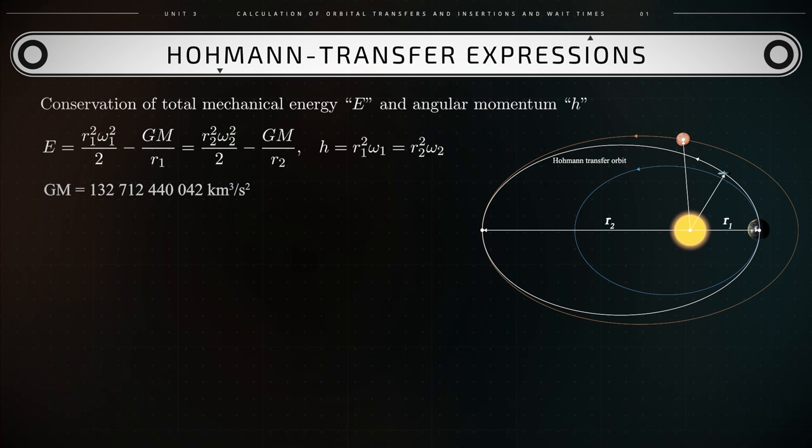From expression 1, we then obtain the following results for the angular speeds omega 1 and omega 2. Omega 1 squared equals 2 GM over r1 cubed times r2 over r1 plus r2. And omega 2 squared equals 2 GM over r2 cubed times r1 over r1 plus r2.